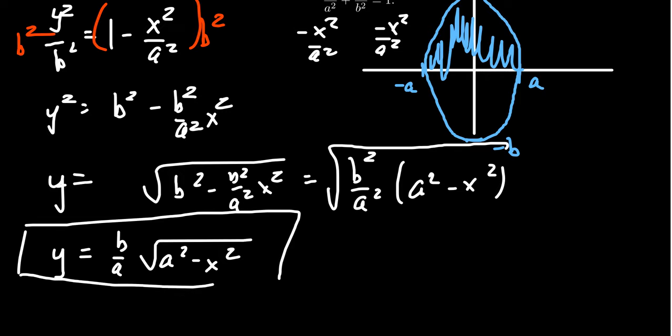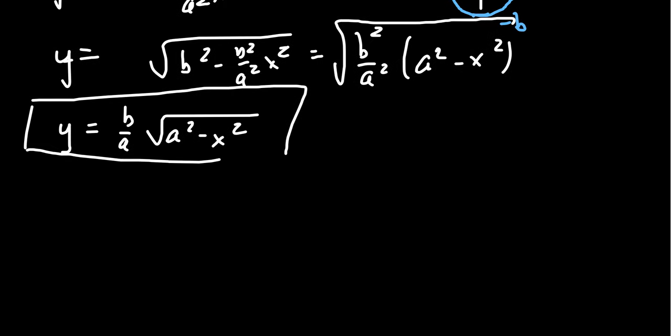We need to find the area under this curve doubled. So the area we're looking for, capital A, will be two times the integral of y dx. We just found a formula for y, so we'll plug that in. We get b over a times the square root of a squared minus x squared dx.